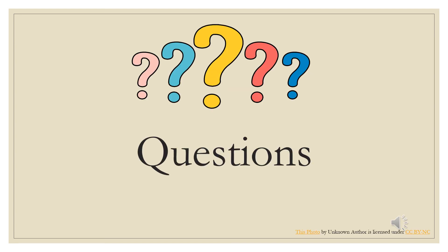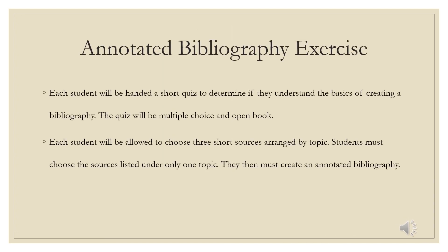Does anyone have any questions? If no one has any questions, we will move on to the exercise. Annotated bibliography exercise. For this exercise, each student will be handed a short quiz. The quiz will be multiple choice, open book, and electronic sources may be used. The reasoning for allowing the students to use books and electronic sources is that in the real world, students will be allowed to use these tools to create their bibliographies and reference pages. After the quiz is completed and a passing grade is achieved, the students will be allowed to pick a topic from a list that corresponds with a set of sources. Students may not choose sources from different topics. Students will then choose at least three sources and create their annotated bibliography. Students must demonstrate the ability to properly cite sources and use critical thinking to create an annotation.